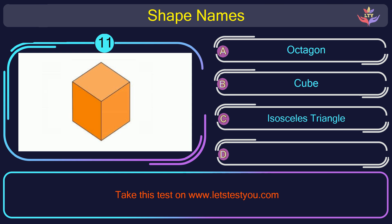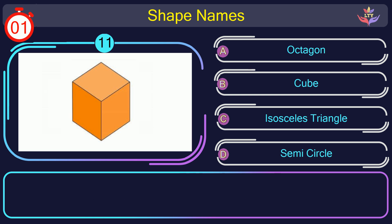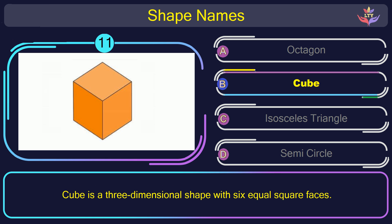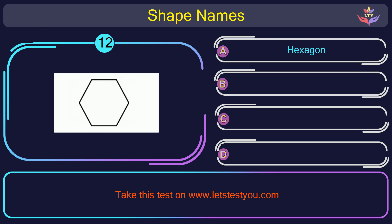Question number 11. Could you recognize the name of the shape in this picture? The correct answer is option B. Cube. Cube is a three-dimensional shape with six equal square faces.